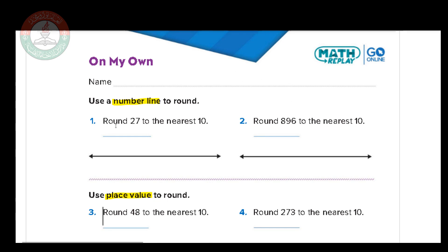Here it says round 27 to the nearest 10. Looking at the tens place, which is 20, we need to see if 27 rounds to 20 or 30. On the number line we place 20 on the left and 30 on the right, and we need to find where 27 falls. In the middle of 20 and 30 is 25.